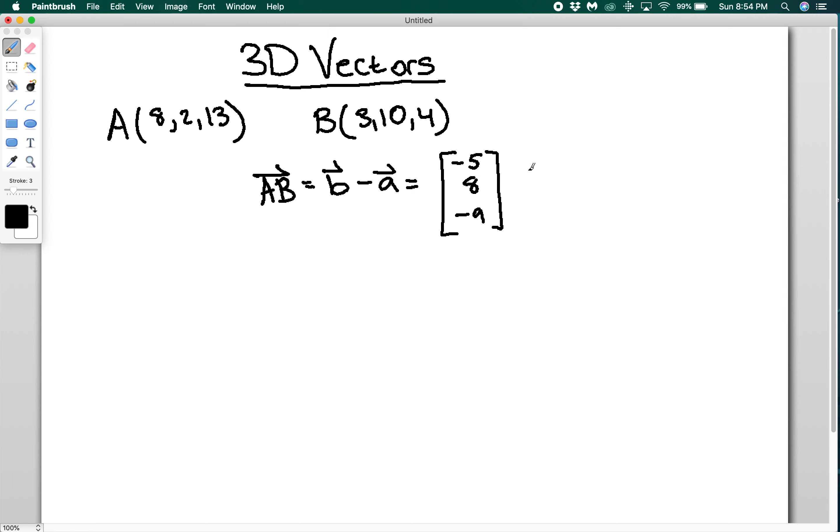And then if we want the magnitude of vector AB, we can calculate that as well, right? That's just going to be the square root of, we're going to have 25 + 64 + 81. So that'll be the square root of 170, which is going to be around 13.0384.